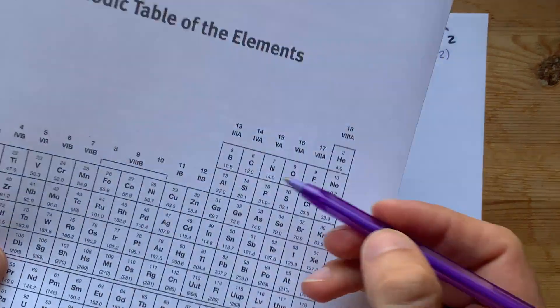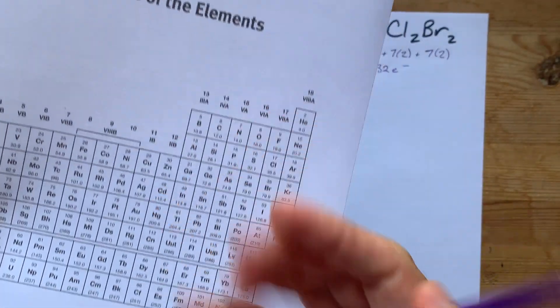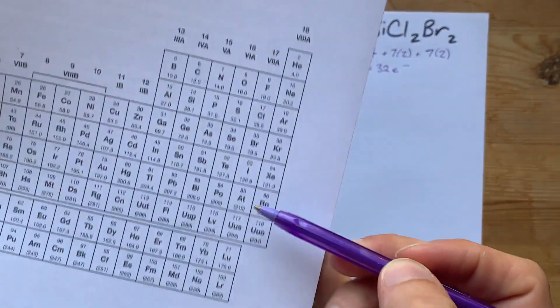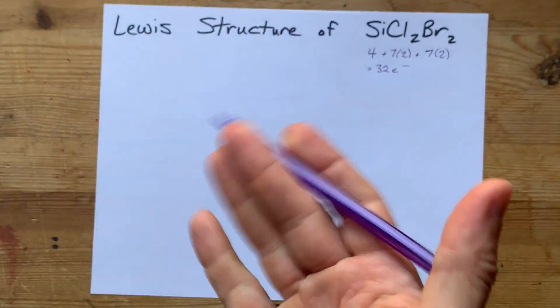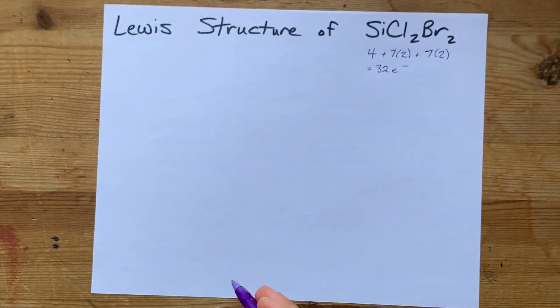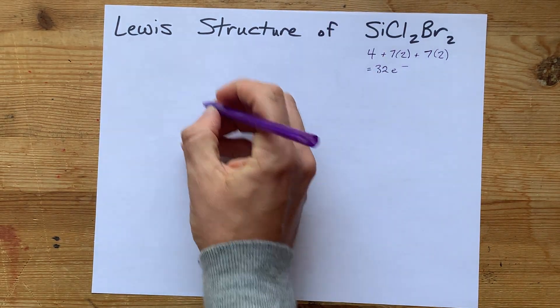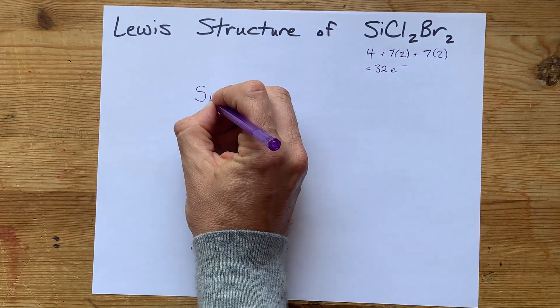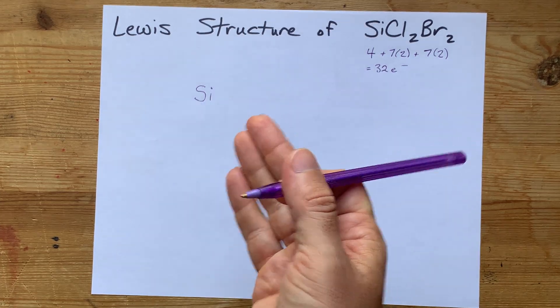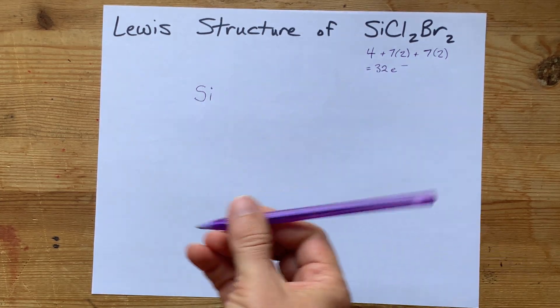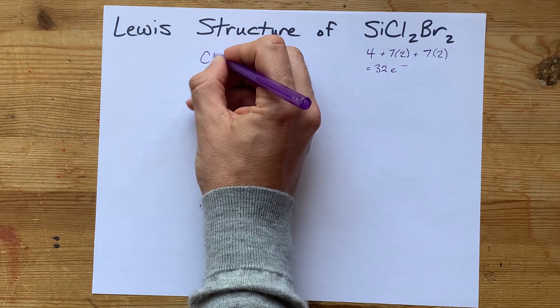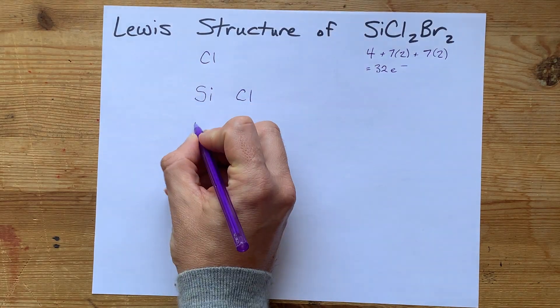Now of these, silicon likes making four bonds, similar to carbon. Bromine and chlorine prefer to make a single bond if possible, so I'm going to put the silicon in the center. It has the capacity to bond to the most things. Now I'm going to surround it by two chlorines and two bromines.